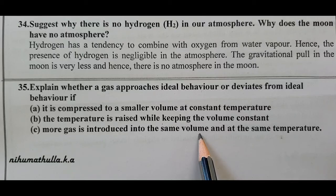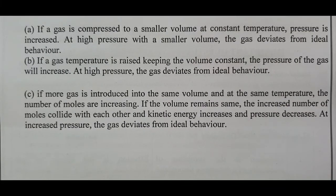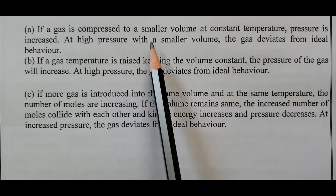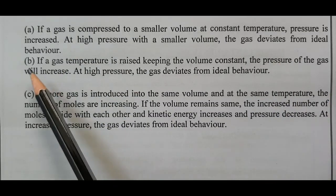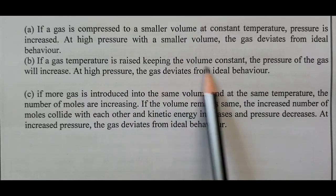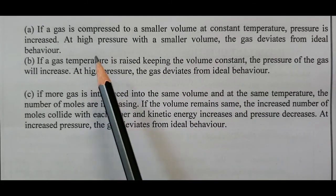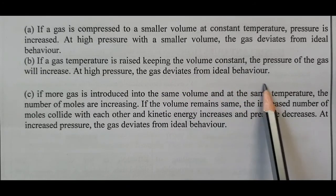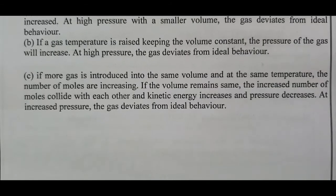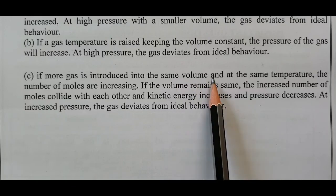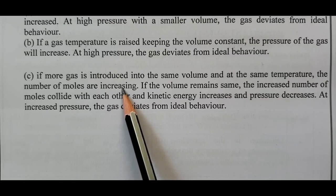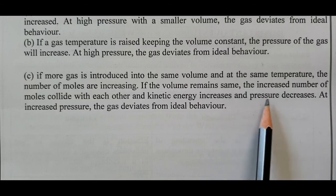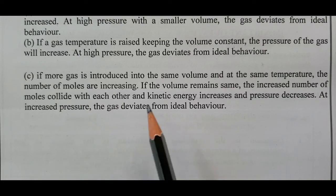Question number 35: Why do gases deviate from ideal behavior? First, if a gas is compressed to a small volume at constant temperature, pressure is increased. At high pressure with a smaller volume, the gas deviates from ideal behavior. Second, if a gas temperature is raised keeping the volume constant, the pressure of the gas will increase, and at high pressure the gas deviates from ideal behavior. Third, if more gas is introduced into the same volume at the same temperature, the number of moles increases. If the volume remains the same, the increased number of moles collide with each other, kinetic energy increases and pressure increases. So at increased pressure, the gas deviates from ideal behavior.